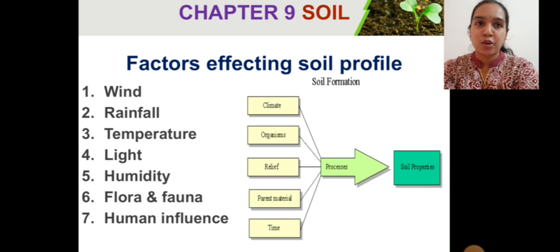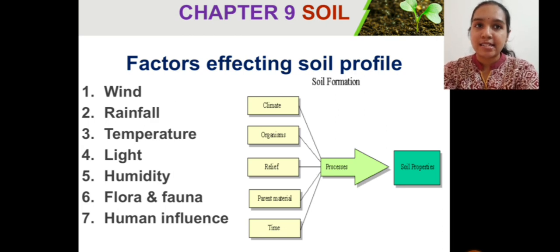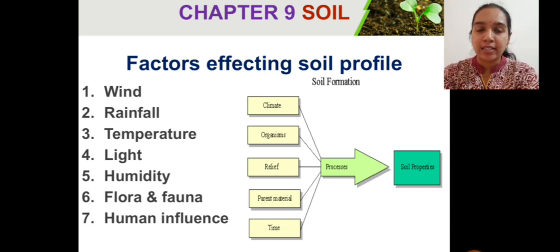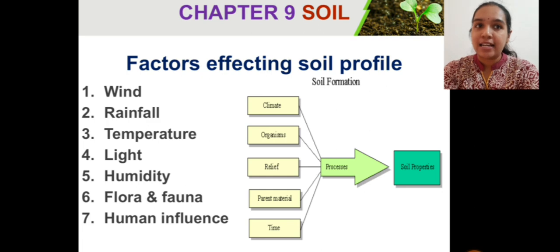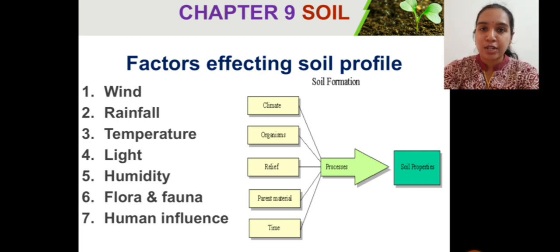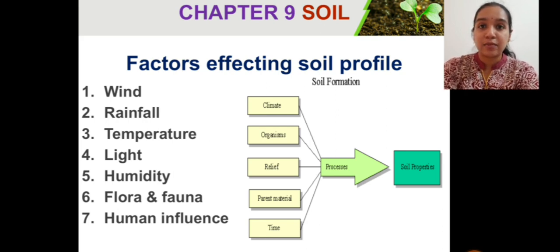When we learned the soil profile, we learned different types of horizons and their characteristics. Now we will see what are the factors affecting soil profile. They are wind, due to which soil is sometimes carried away; rainfall, which helps the nutrients in soil reach the plants; temperature, light, humidity, and other climatic conditions. The flora and fauna, which are the plants and animals, and human movement also influence the soil profile. We learned this in the very beginning of the chapter.